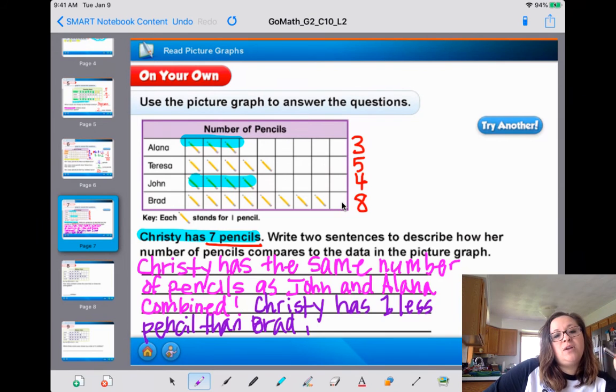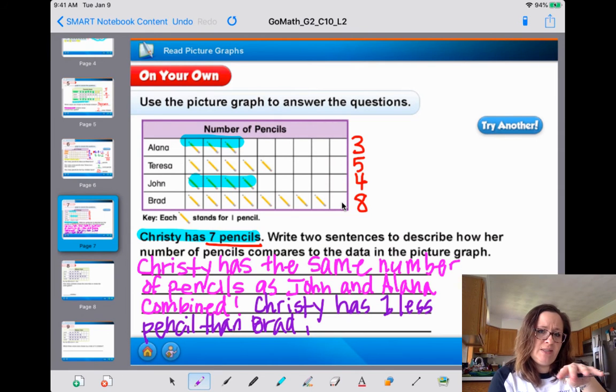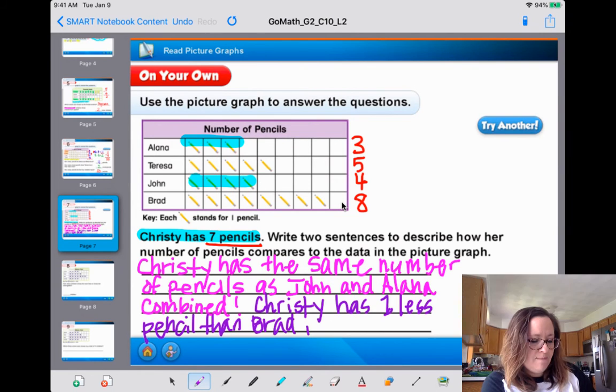So now if we're thinking about adding our own information to the graph with Christie, those are two ways to do it. You could also say, you know what? You could say, Christie has two more pencils than Teresa. Christie has four more pencils than Elena. Brad has one more pencil than Christie, right? So if you're using the graph to talk about Christie now, as long as you're using her number of pencils in the sentence, you should be good to go, okay? Look for that on your GoMath today.